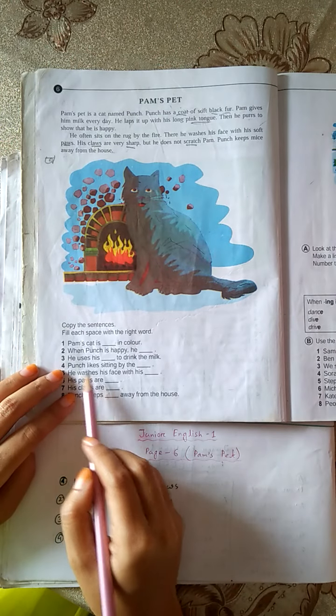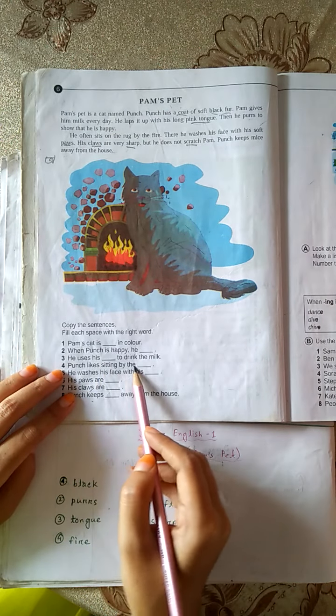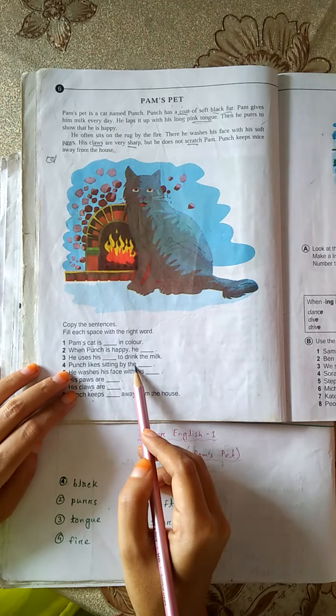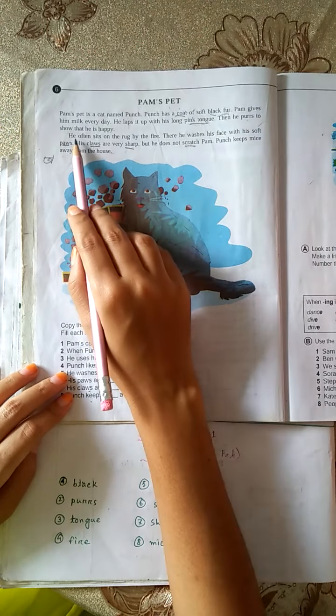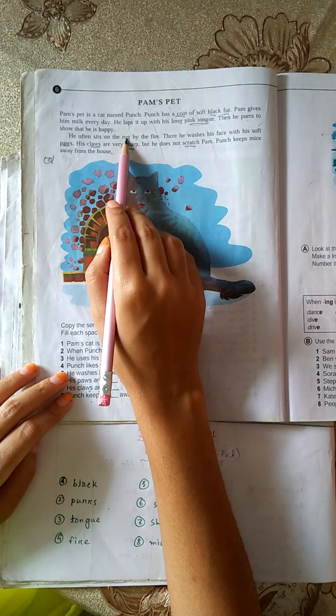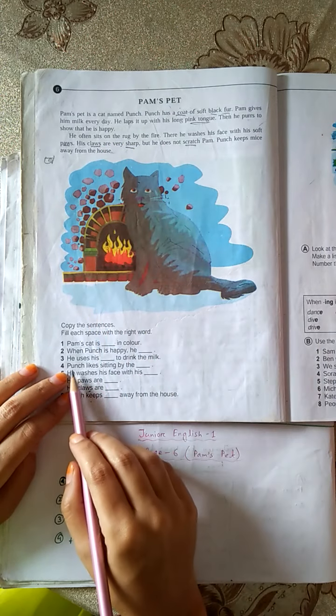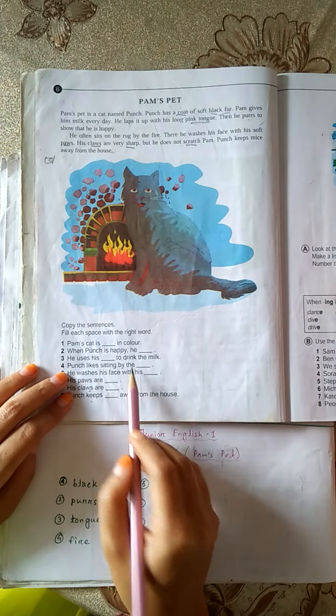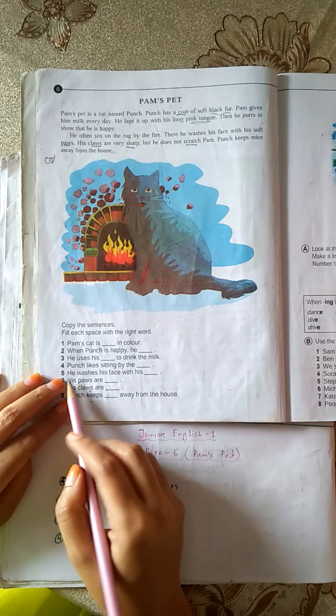Punch likes sitting by the fire. He often sits on the rug by the fire. Punch likes sitting by the fire.